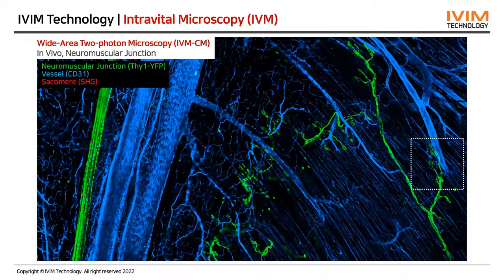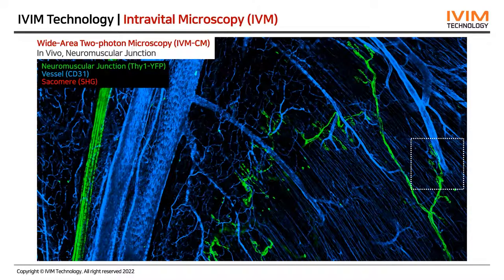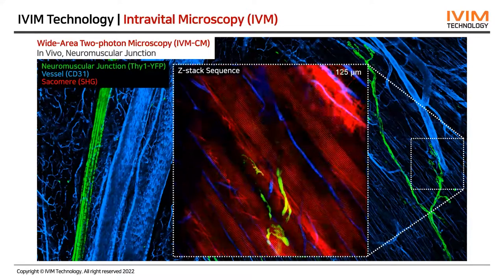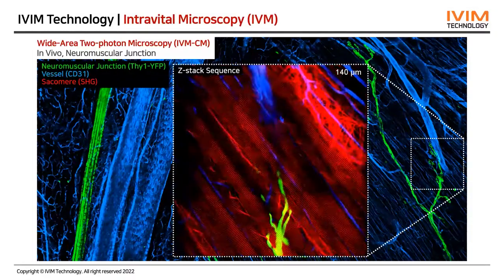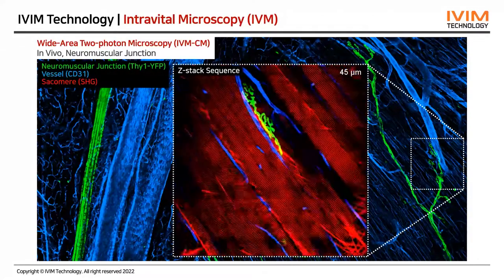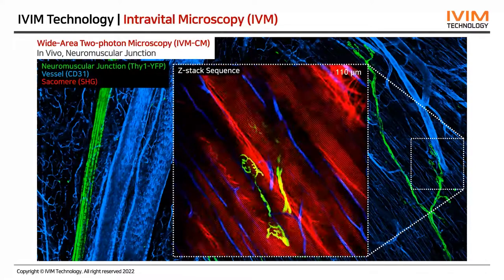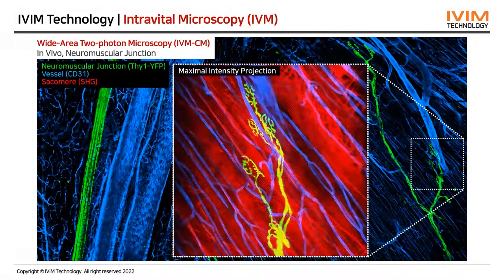This is a wide-area image obtained from skeletal muscle of a live mouse model using the two-photon model IVM-CM, which clearly shows blood vessels in blue and nerves in green. In this single field-of-view image, you can clearly see the red sarcomeres in myocytes with SHG signals without additional labeling, and green neuromuscular junctions and blue capillaries in a tomographic manner. The whole cellular-level distribution is more easily seen in the maximum intensity projection image.